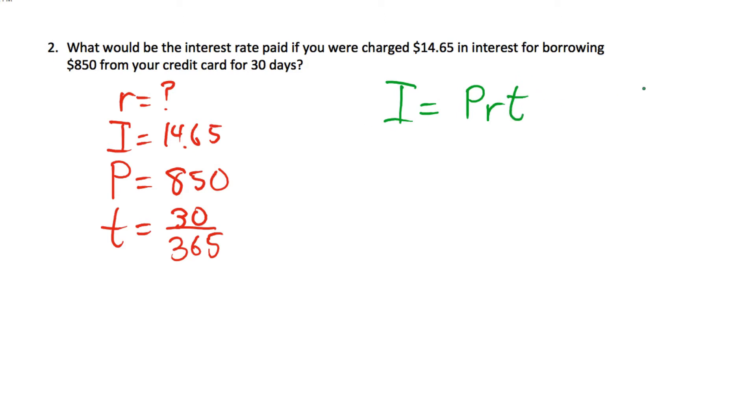So we can substitute all of these numbers that we know into our formula I = PRT. We know all of the variables except one. And so we can use our algebra solving skills to determine the missing number here, 850 multiplied by r multiplied by time.